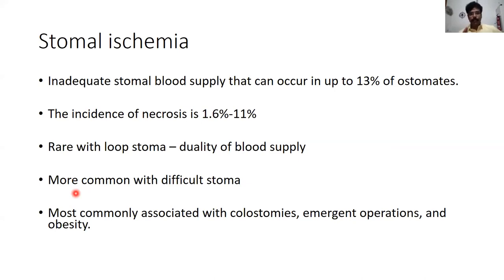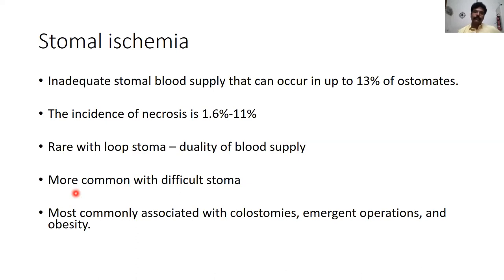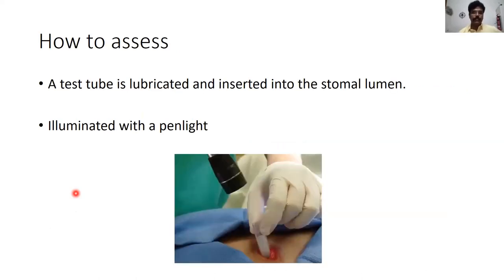Ischemia is very rare with loop stomas because if the arcade has not been disturbed, blood supply comes from both the afferent and efferent limbs. As discussed in the previous session, it is more common with difficult stomas — we are likely to encounter it with colostomies, in emergency surgeries, and in obese individuals.